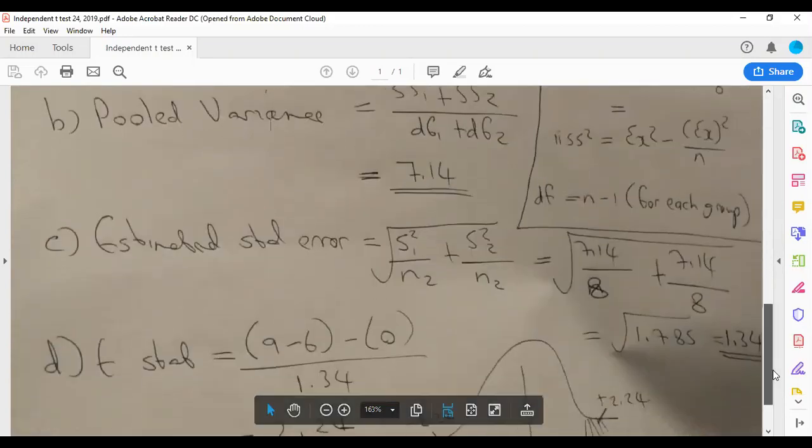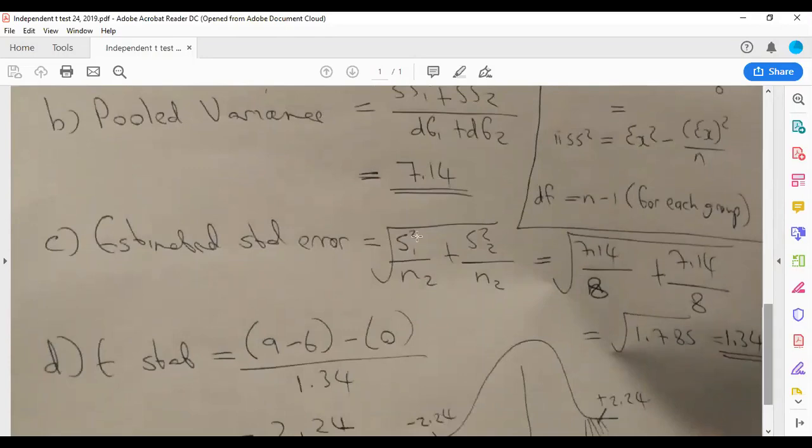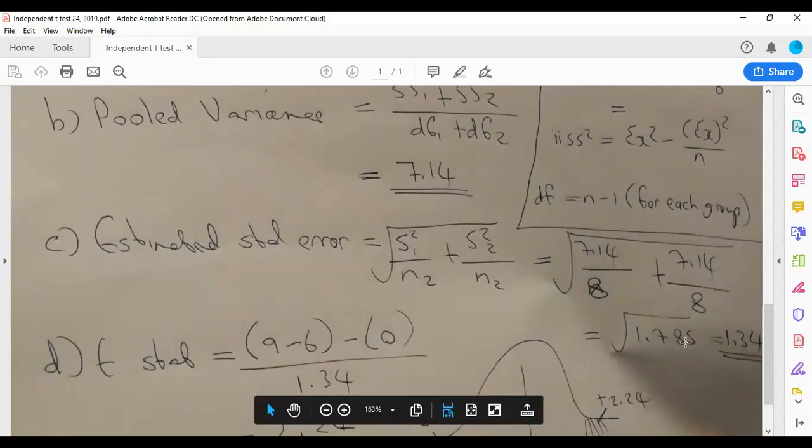We use that pooled variance to calculate estimated standard error. So the pooled variance is this one, 7.14, like what I wrote here. And then the n, I mean participants, so divided by 8, plus the pooled variance, and then like that you divide. If you do that, we're going to get an answer of 1.784. Square root of that, the answer is 1.34. So that is the estimated standard error, that is the denominator of the equation.